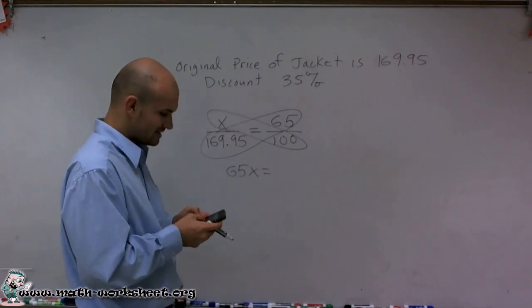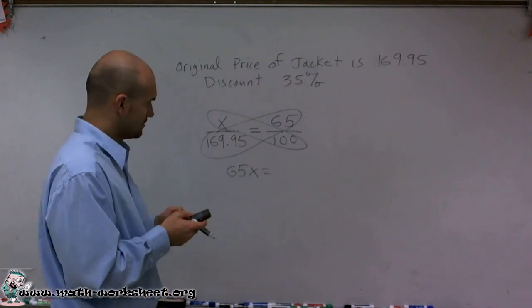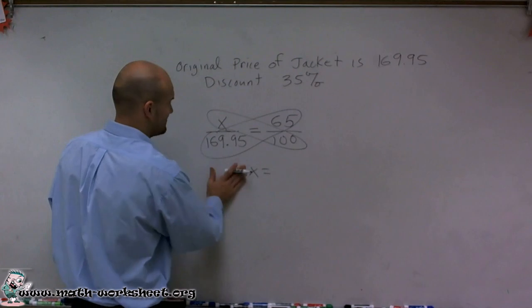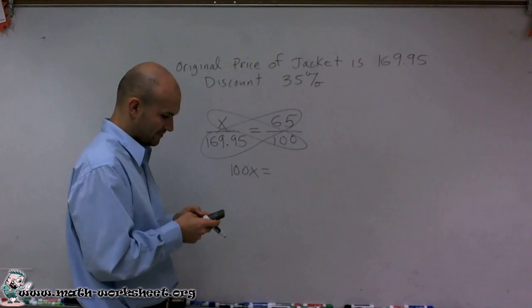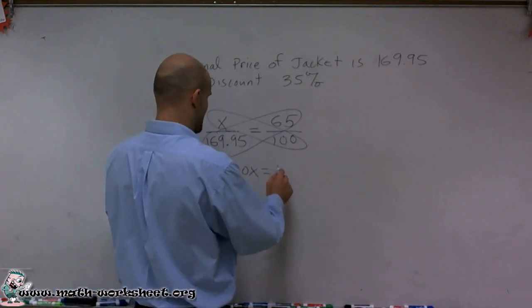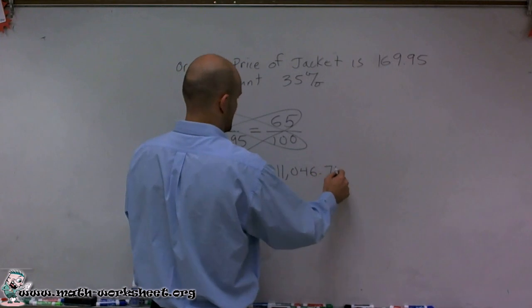So I'll do 169.95, sorry, that's not 65X, that's 100X. 169.95 times 65, and I get 11,046.75.